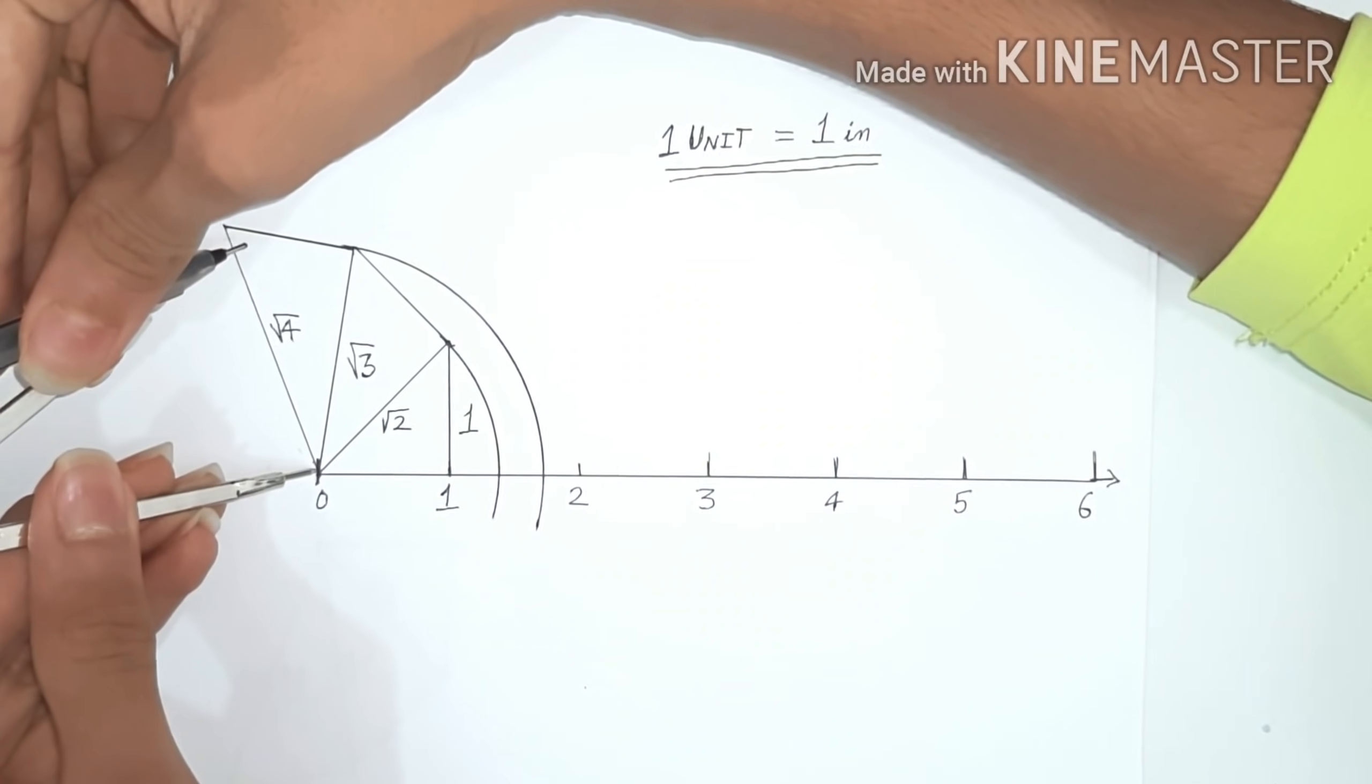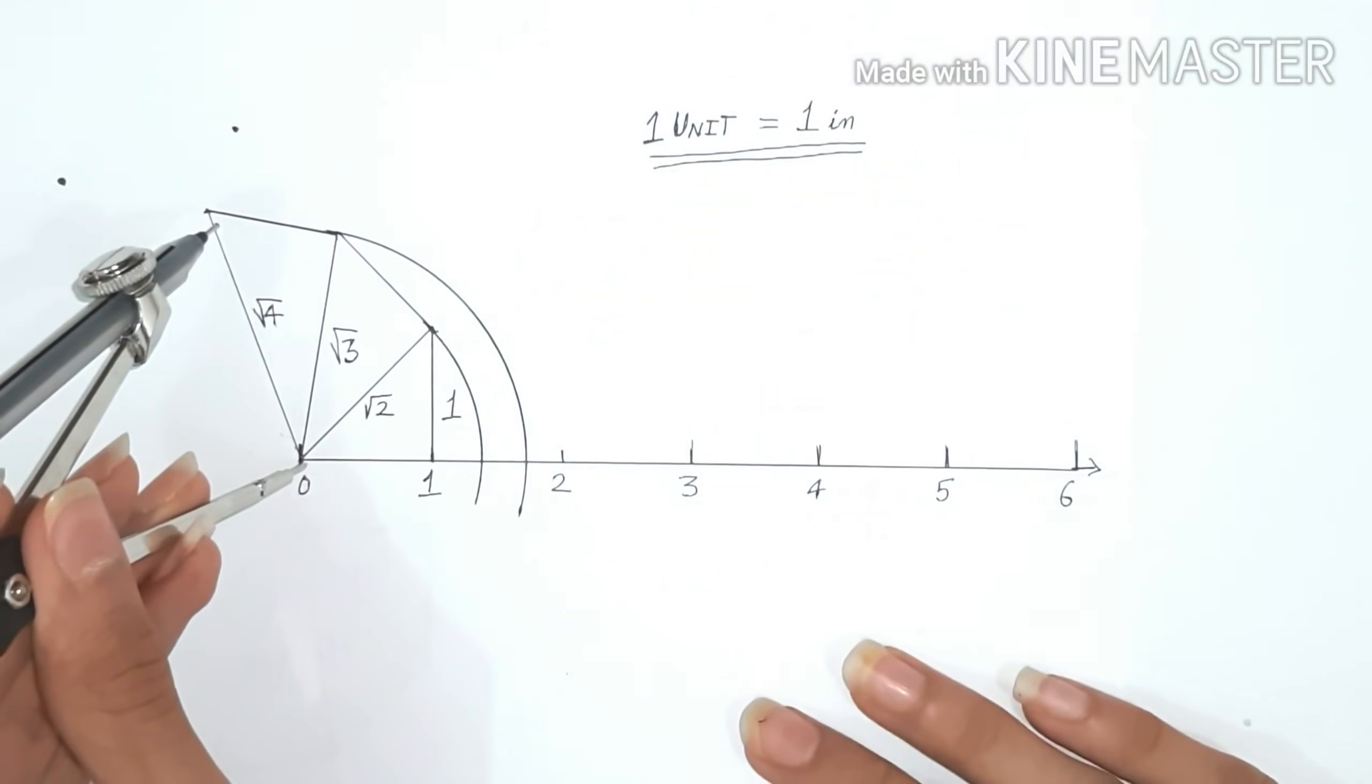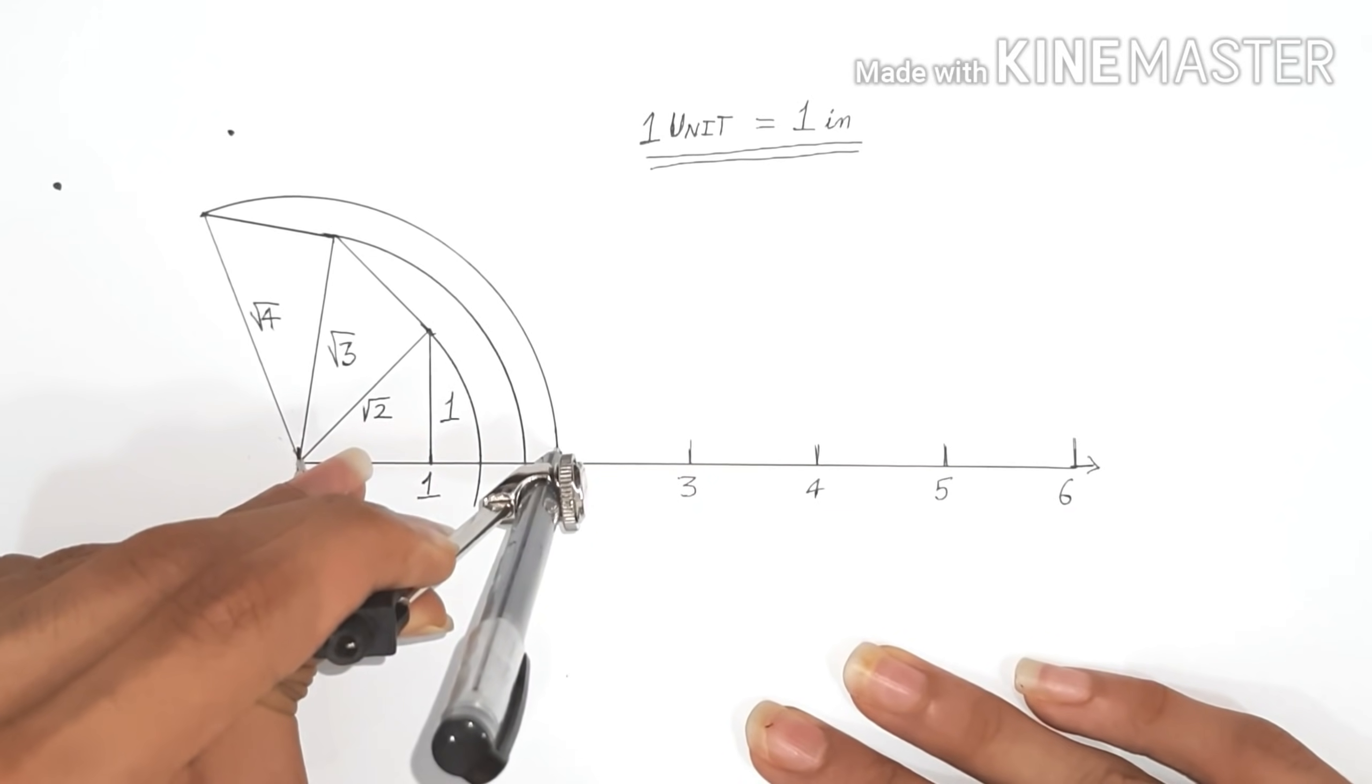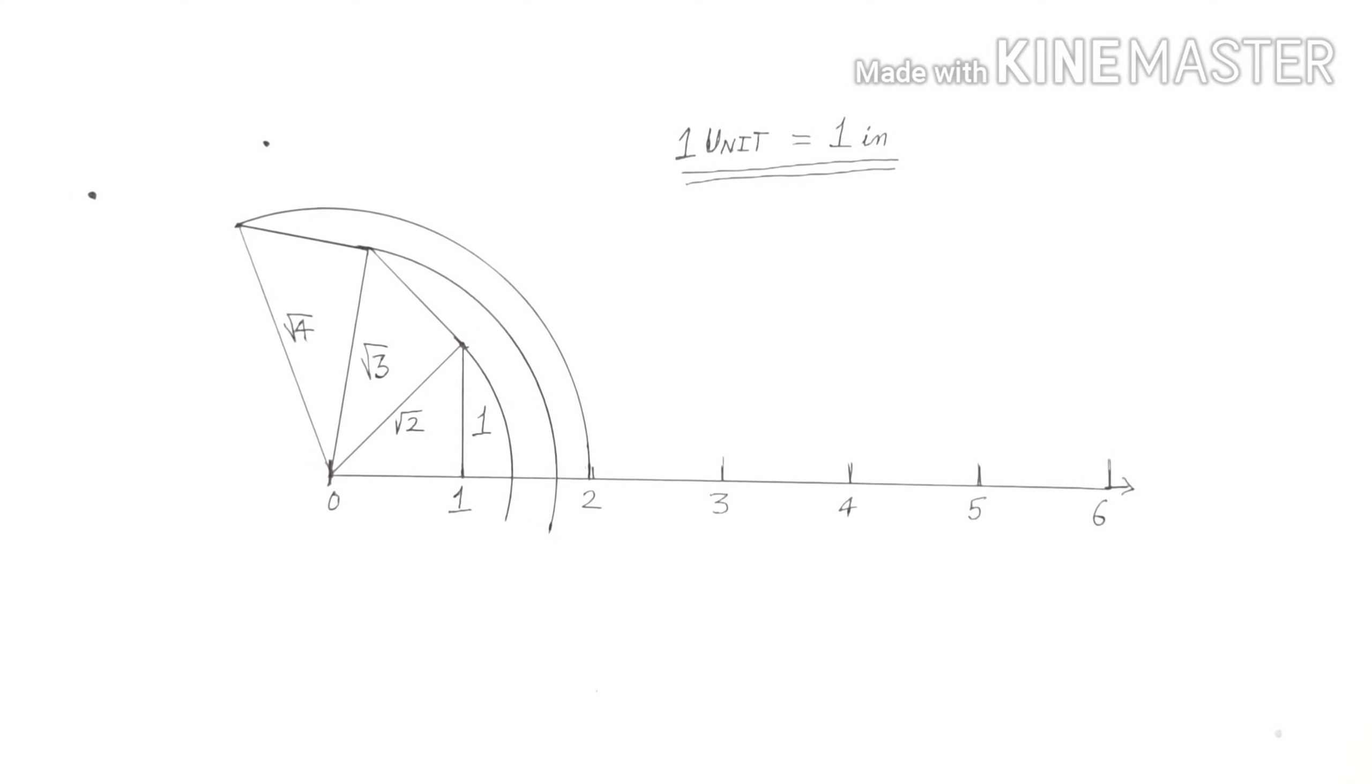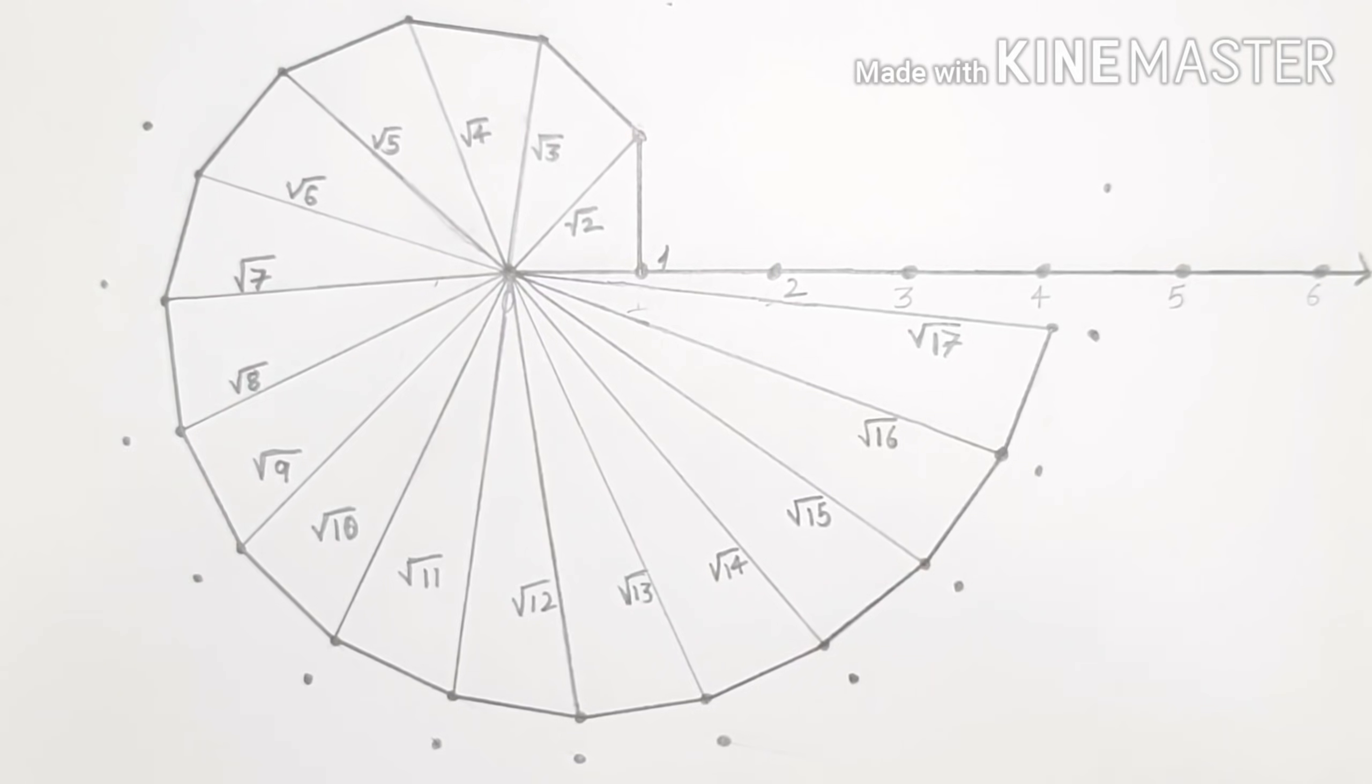So we'll take the radius square root 4 and make an arc which cuts the number line.